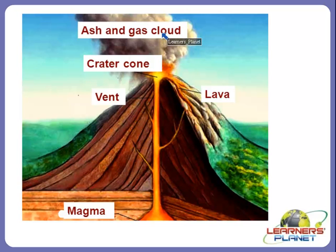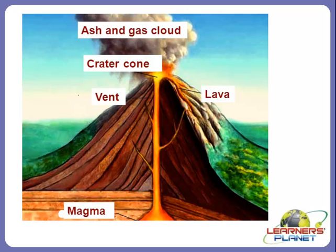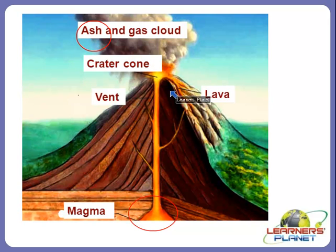Volcanoes are mountains characterized by having a crater that opens downwards to a reservoir of molten rock. When pressure from gases within the molten rock becomes too great, an eruption occurs. These can be quite modest, resulting in little more than a trickle, or they can explode with considerable force accompanied by lava flows, flattened landscapes, or poisonous gases flying with rock and ash. Due to their great heat, lava flows are a great fire hazard, and in forested areas wildfires often result. Lava flows destroy everything in their path.